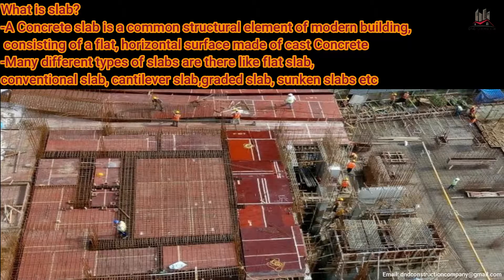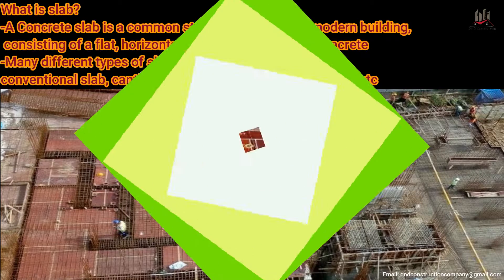What is a slab? A slab is a structural member of a building which consists of a flat horizontal surface made up of concrete. This is the main important part of a building. In a building, many different types of slabs are there like flat slab, conventional slab, cantilever slab, graded slab, and sunken slab. Today we will study conventional slab in a building.